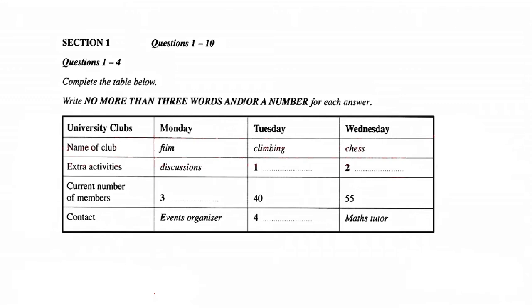But I think they're hoping to extend it to 150. The climbing club's quite small, 40 people. And the chess club is fairly healthy at 55.